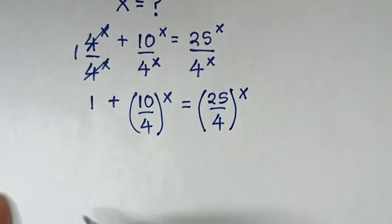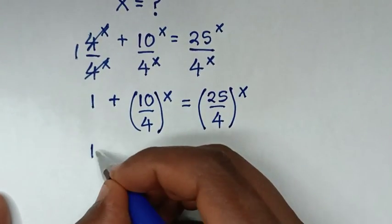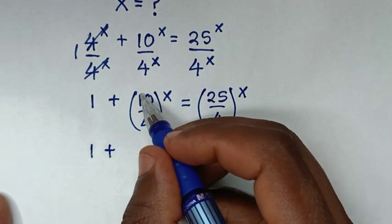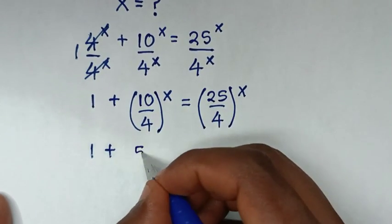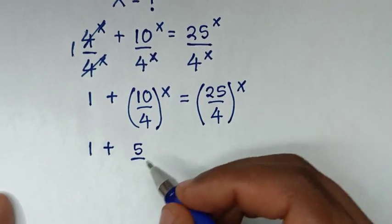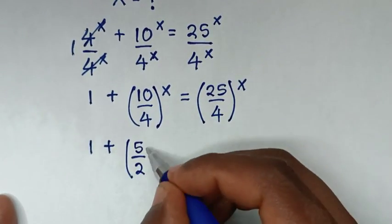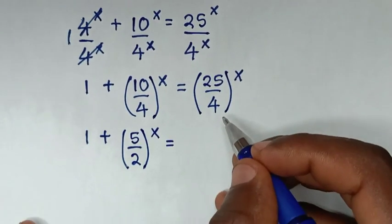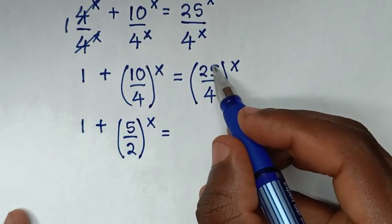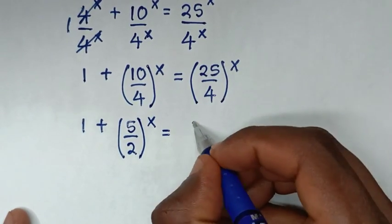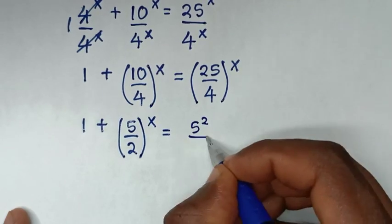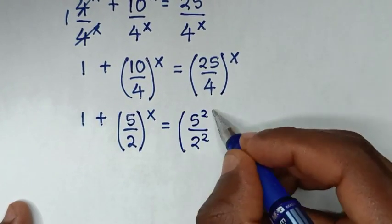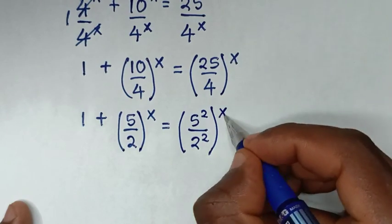In the next step, we simplify: 10 divided by 2 is 5, and 4 divided by 2 is 2, giving (5/2)^x. And 25 is 5 squared, while 4 is 2 squared, giving (5²/2²)^x, which is (5/2)^(2x).